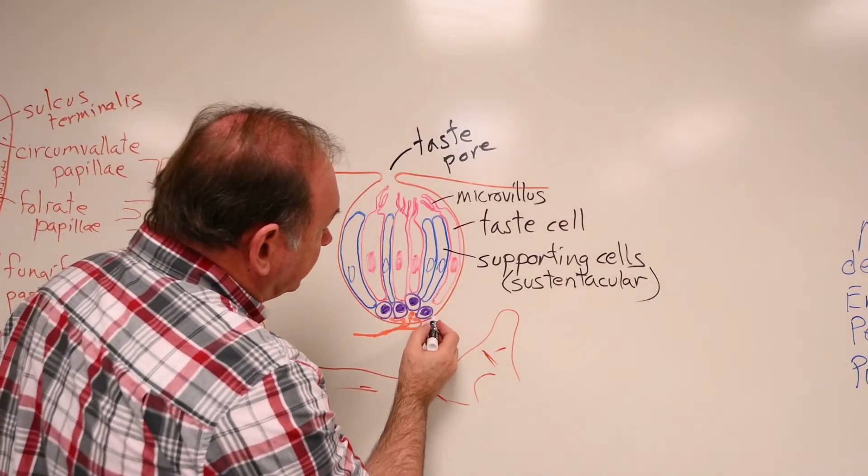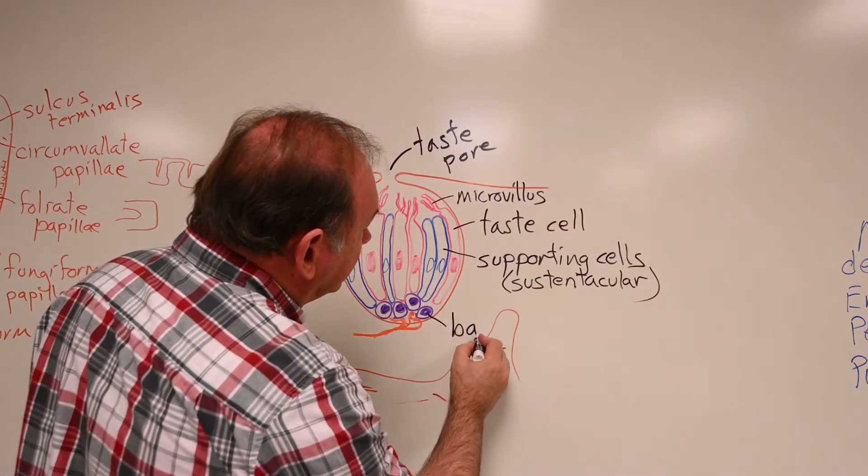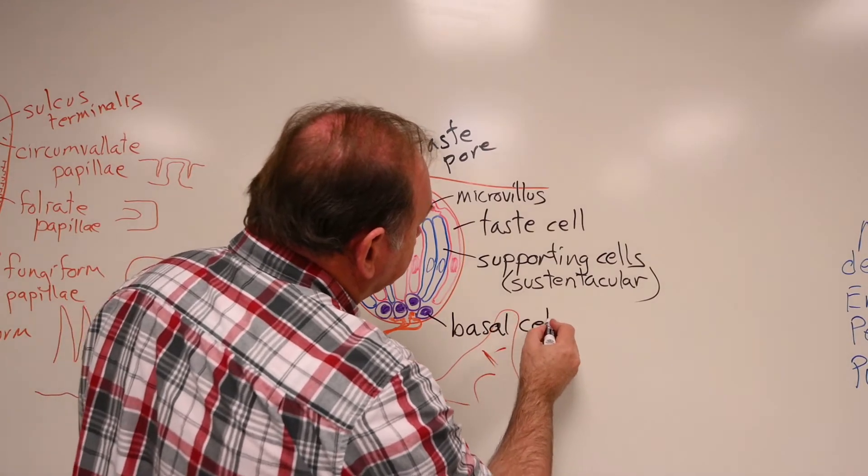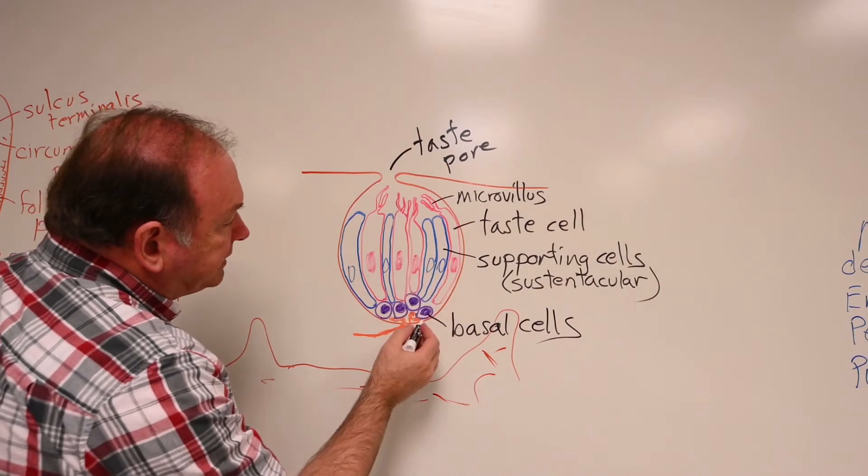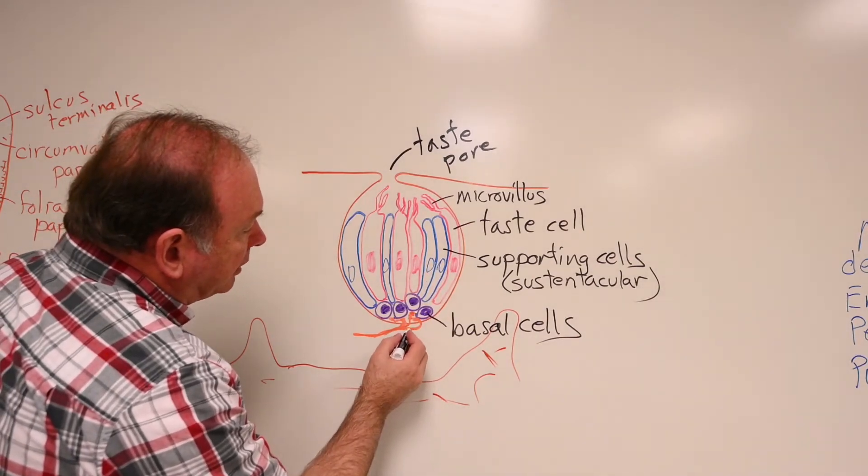At the base we have cells that are simply called basal cells. And they, the base of all these cells come down and find themselves in close contact with nerve endings.